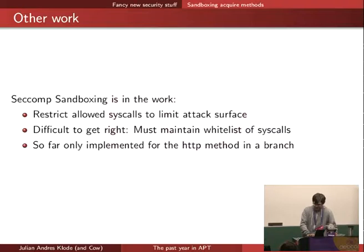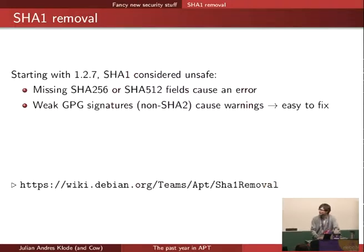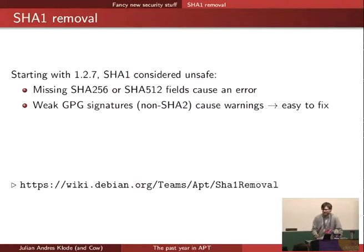Another topic was much more publicized: the SHA1 removal. Starting with 1.2.7, we are considering SHA1 as an unsafe hash algorithm. If you now miss an SHA2 field, that causes an error. For GPG signatures that are non-SHA2, they only cause warnings, because there were just too many of them and the whole thing would break a lot of repositories more than it currently does.